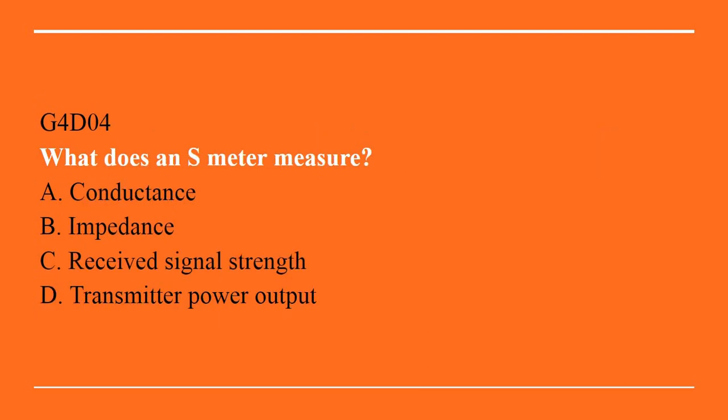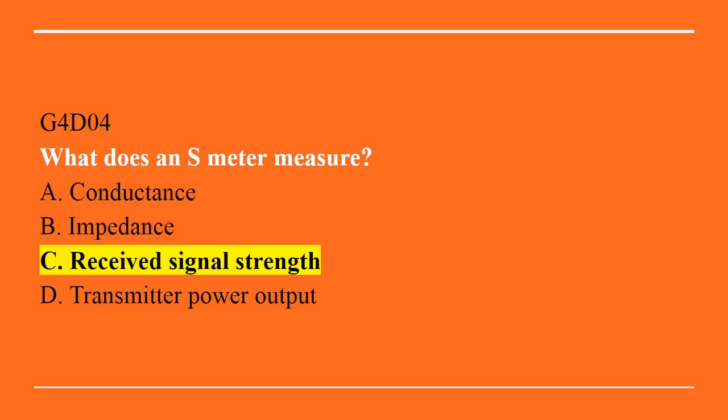G4D04: What does an S meter measure? A. Conductance. B. Impedance. C. Receive signal strength. Or D. Transmitter power output. The answer is C. Received signal strength.